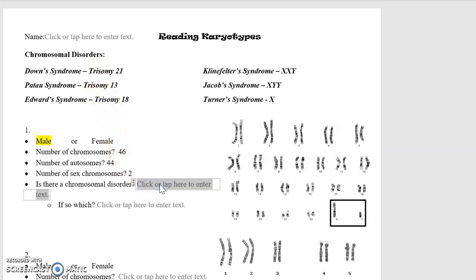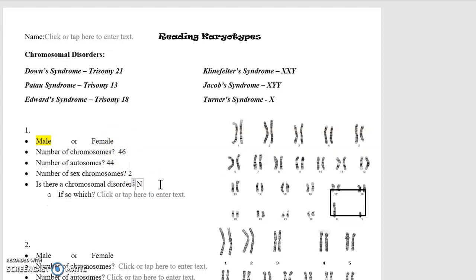So is there a chromosomal disorder in this individual? No, there is not. They are normal, and so it says if so which, and this one you don't even have to put anything because this individual does not have a chromosomal disorder. If your box gets moved you can just scoot it down.